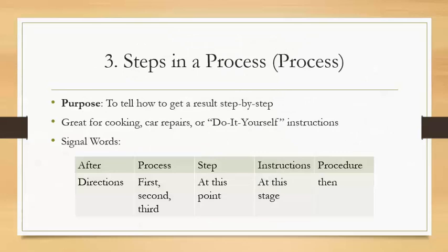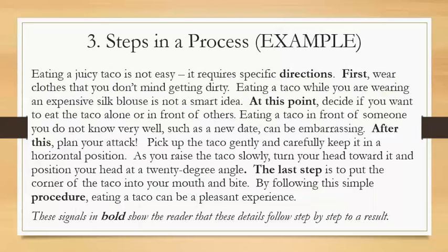Number three: steps in a process, or a process paragraph. The purpose here is to tell how to get a result step by step. Think about recipes, car repairs, or do-it-yourself instructions — this step-by-step process is a great way to write those kinds of instruction guides. Signal words include: after, process, step, instructions, procedure, directions, first, second, third, at this point, at this stage, and then. You can pause the video to read through the example — it's an interesting and funny one — and look at the words in bold to see the steps-in-a-process structure.